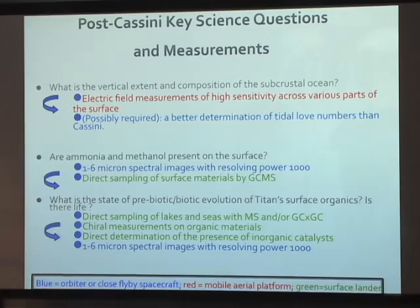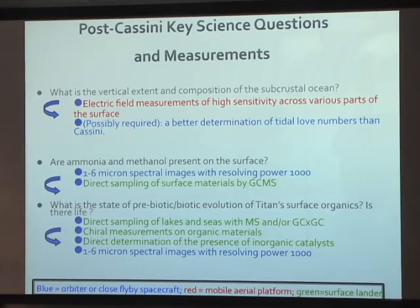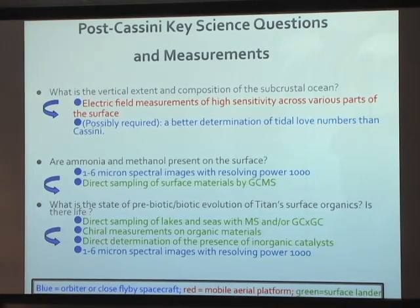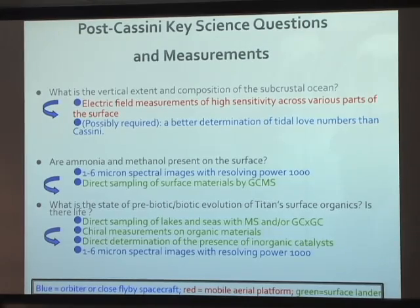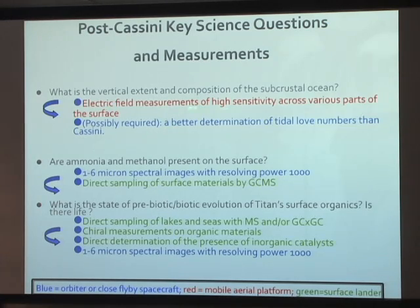What is the vertical extent and composition of the subcrustal ocean? Hopefully Cassini will get that, at least in part. There's an intriguing measurement of electric fields and their altitude dependence from the Huygens probe — the interpretation that those electric fields represent a Schumann resonance within a cavity defined at the top by the ionosphere and at the bottom not by the crust but by a conducting layer. The altitude profile seems consistent with that conducting layer being the ocean, 50 to 90 kilometers below the surface. Doing this better would be important, and it was listed in the Titan-Saturn System mission study.